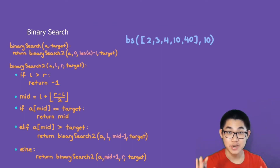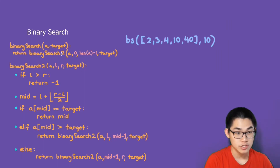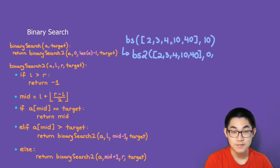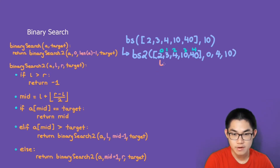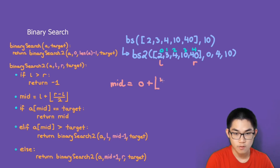Let's take a look at the recursive binary search - it is very easy. We have binary search, and we want to search for element 10 in this array. This function calls binary search 2, adding two parameters: L which is 0, and R which is length A minus 1 (so 4, the last index), and the target which is 10. The base case says if left is greater than right, return minus 1. But here L is less than R, so we calculate mid: 0 plus floor of 4 minus 0 over 2 gives 2. Mid is at index 2.